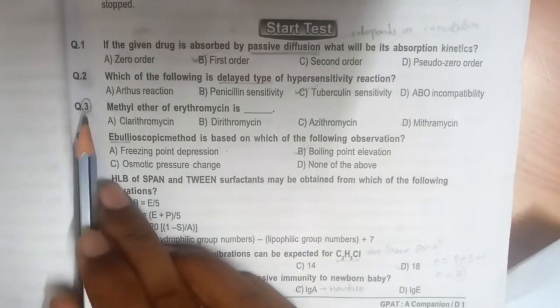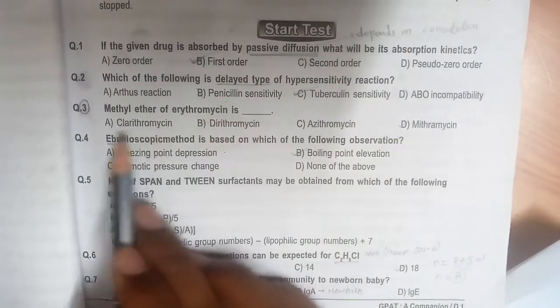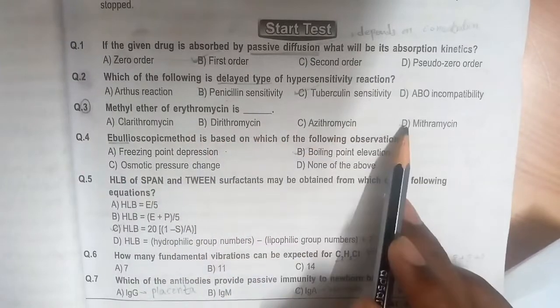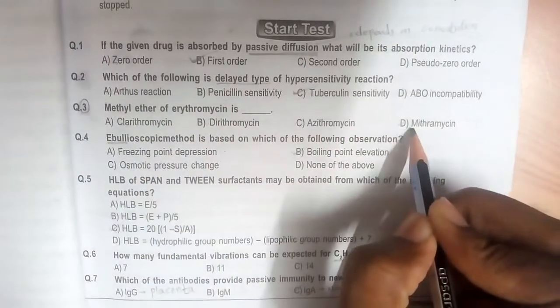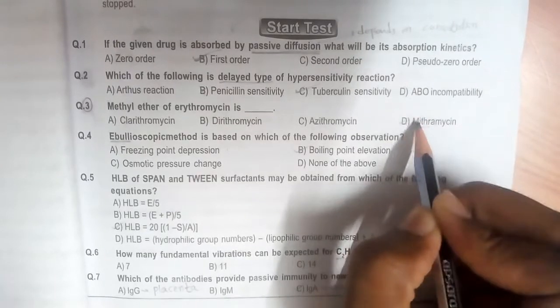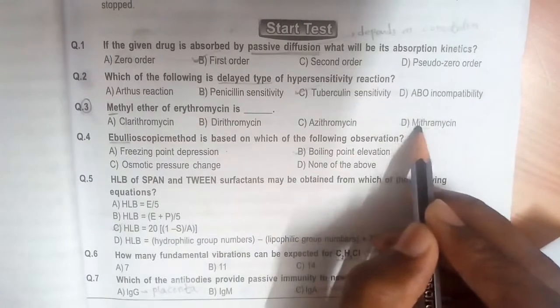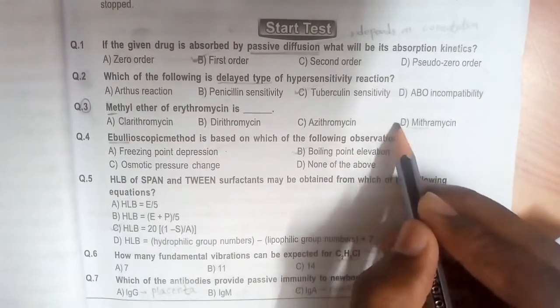Third question: Methyl ether of erythromycin is? If you see these four options, only one has the prefix 'meth'—indirectly they are giving the answer. The answer is clarithromycin.